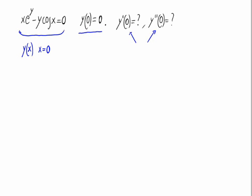This is the classical problem of implicit differentiation, and what we'll do is, from this expression, differentiate with respect to x. We have x times e raised to y, that is, a product of functions.